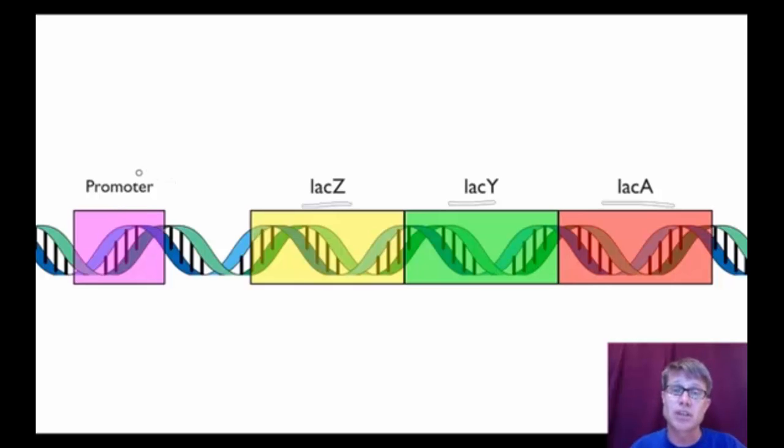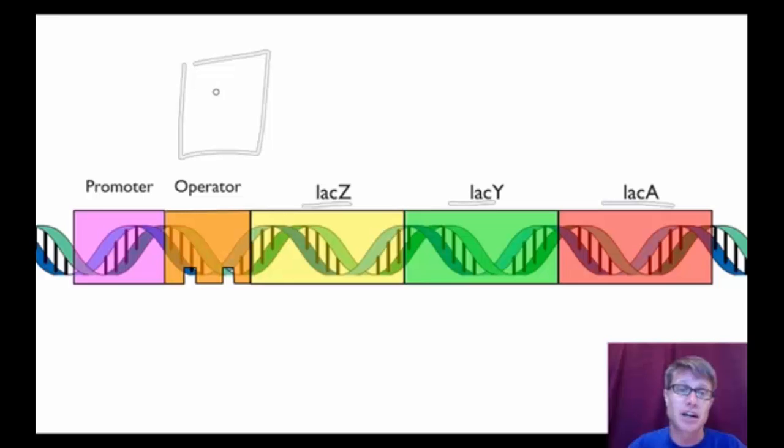Above that they'll have a regulatory sequence called a promoter. Remember that's going to be where RNA polymerase grabs on. And the other thing they'll have in an operon is called an operator. An operator sits right between the promoter and the genes. And the way I like to think about it is it's like an on-off switch. So it can either be set in an on position or it can be set in an off position. So it regulates whether or not we turn the genes on or we don't.